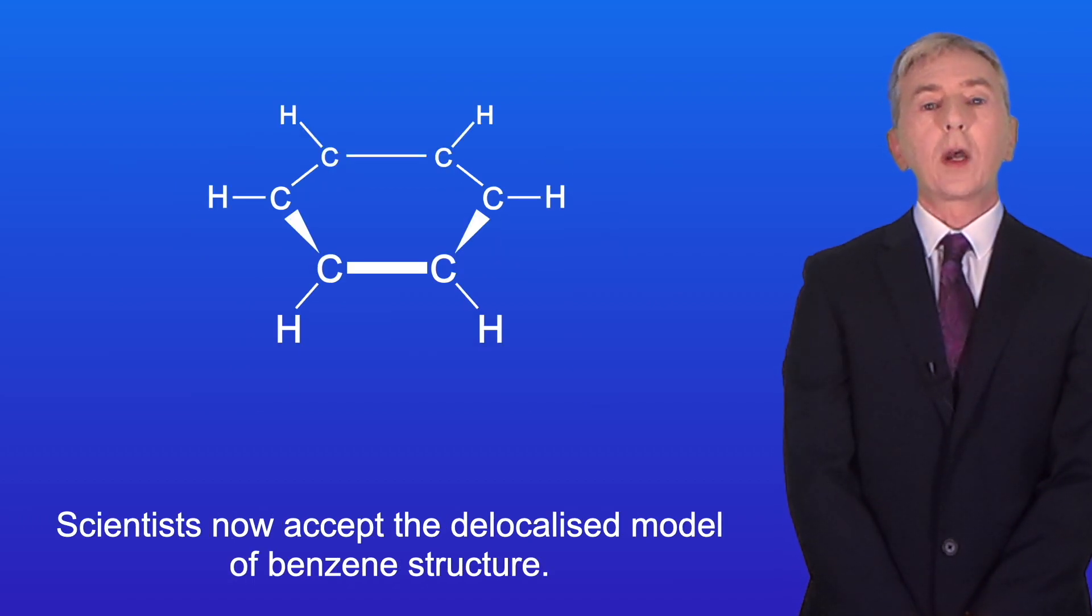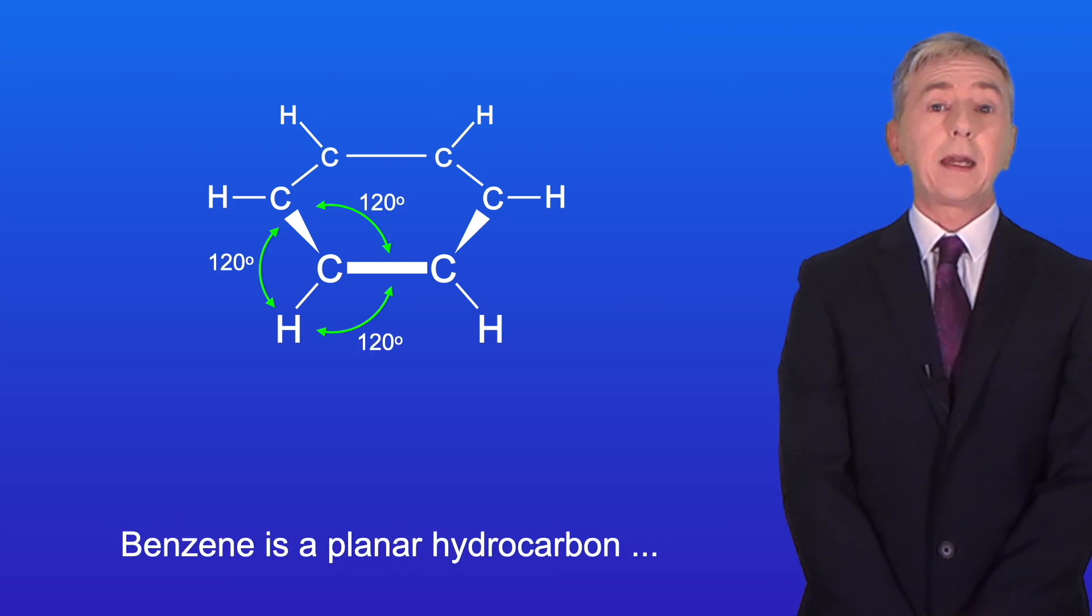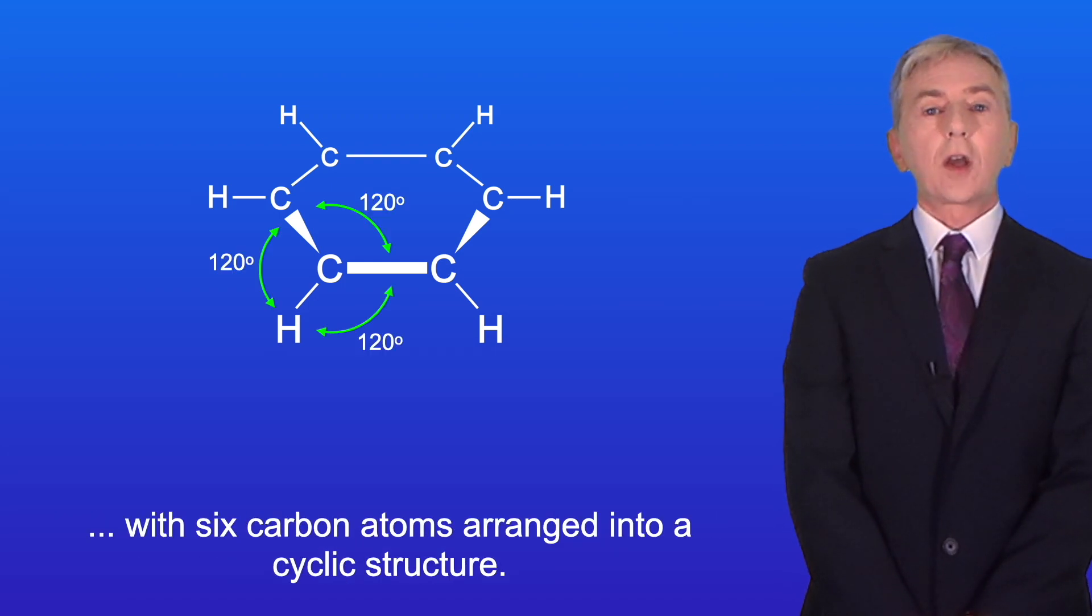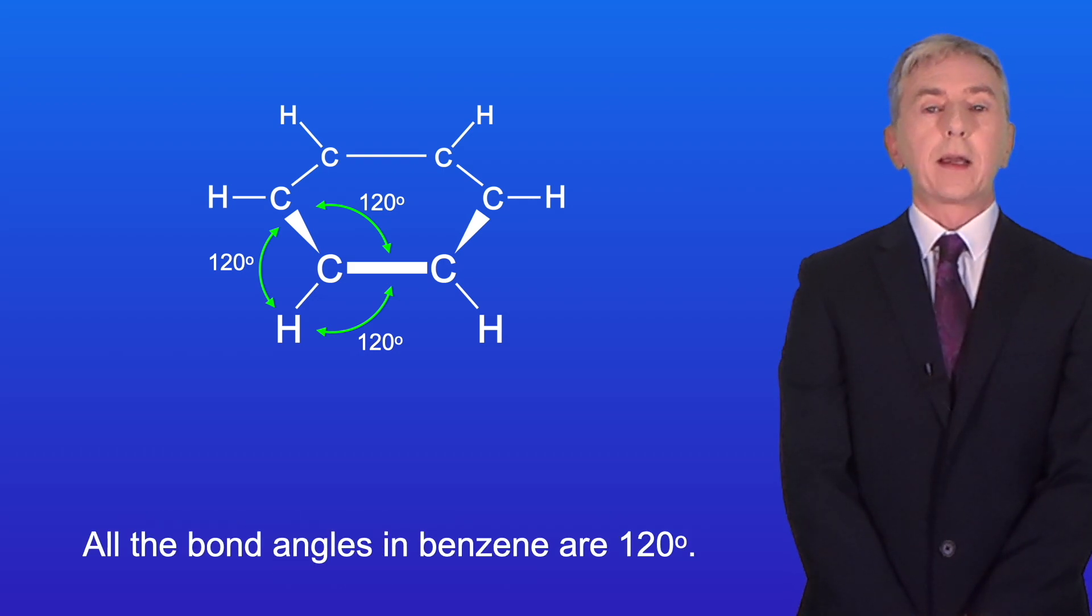Scientists now accept the delocalized model of benzene structure. Benzene is a planar hydrocarbon, with six carbon atoms arranged in a cyclic structure, and all the bond angles in benzene are 120 degrees.